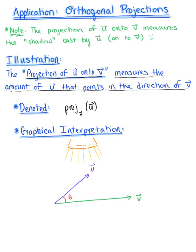Vector u is going to cast a shadow onto vector v. To appreciate that shadow or that projection, think from the terminal point of vector u that there is some straight line coming right down until it intersects vector v at a right angle. The projection of vector u onto vector v is the vector with that same initial point until that straight line — this vector here represents the projection of vector u onto vector v.